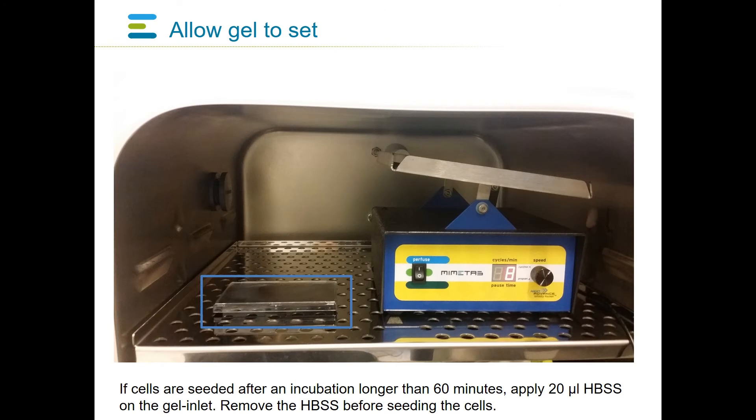The plate is incubated for 30 to 60 minutes at 37 degrees to allow full gelation. The gelation times vary depending on the ECM used. If cells are seeded after an incubation time longer than 60 minutes, apply 20 microliters of HBSS on the gel inlet. Remove the HBSS before seeding cells.